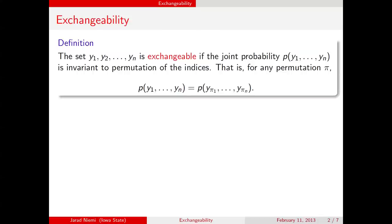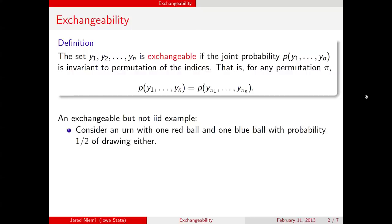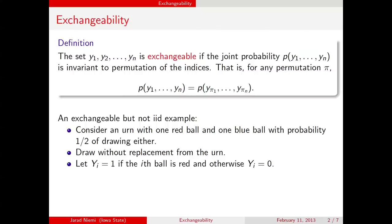I want to give an example of an exchangeable set that is not independent and identically distributed. Imagine an urn with only two balls — one red ball and one blue ball — where the probability of drawing either ball is one half. Now consider drawing without replacement from the urn, so we can only take a maximum of two draws. We let y1 and y2 be the first and second draws, where yi equals 1 if the ball is red, and 0 if the ball is blue.